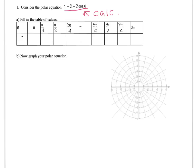When theta is 0, then r equals 2 plus 2 times cosine of 0, and the cosine of 0 is 1, so it's 2 plus 2 times 1, which is 4.